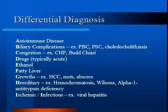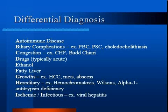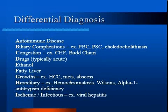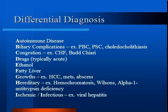Growth refers to lesions of the liver. Malignancies of the liver, whether primary or secondary, as well as infections, can cause hepatocellular damage. Hereditary causes include hemochromatosis, Wilson's, and alpha-1 antitrypsin disorder. Hemochromatosis is a common genetic disorder with a frequency of 1 in 200 for the homozygote state in Caucasians. Think of Wilson's disease in a young to middle-aged patient who has neurologic symptoms. Patients with alpha-1 antitrypsin deficiency may have lung involvement.